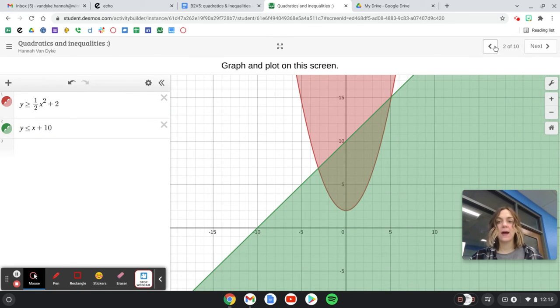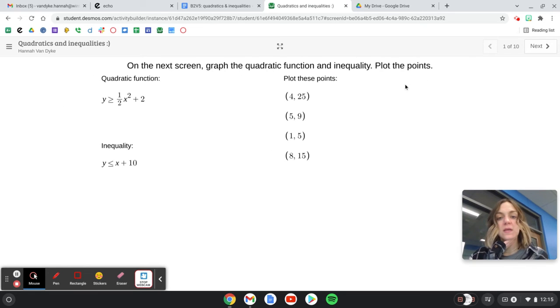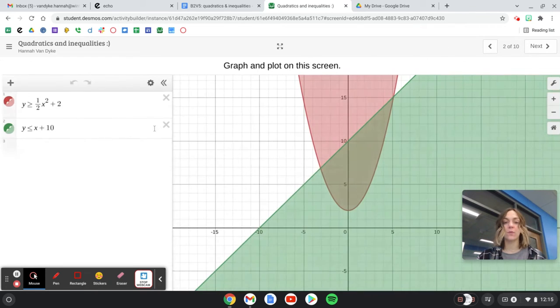Now I'm going to go back to my first screen. Then it says plot the points. So I have four points to plot. Once I do this, I'm done with the instructions on this first screen because I'll have graphed these two and plotted the points.